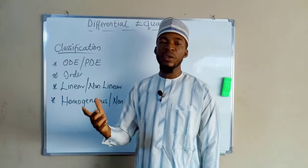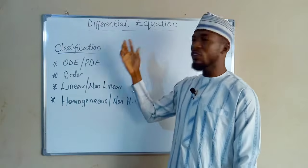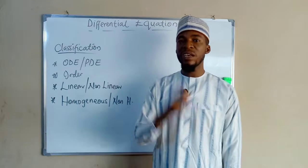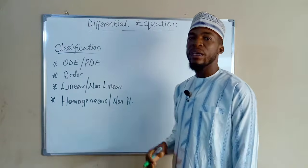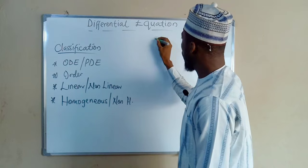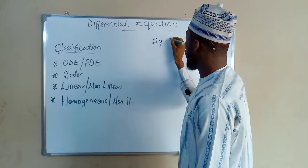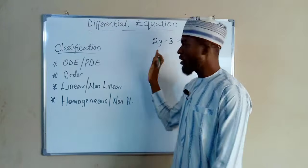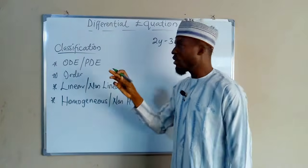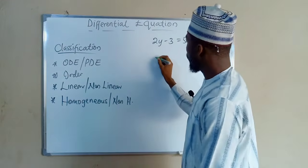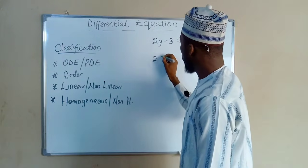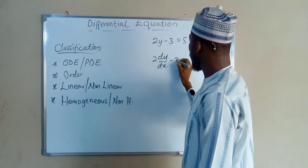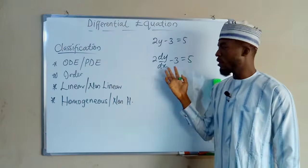Just like a normal algebraic equation, a differential equation is also an equation that relates one or more functions and their derivatives. In an algebraic equation we may have something like 2y minus 3 equals 5. The only thing that differentiates an algebraic equation from a differential equation is the derivative. For example, 2 multiplied by dy/dx minus 3 equals 5 is a differential equation.